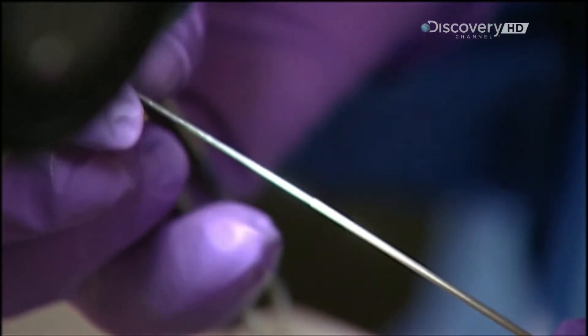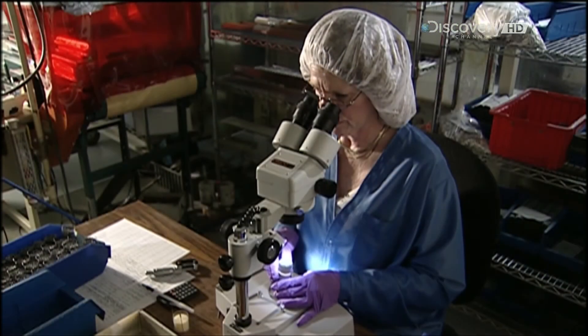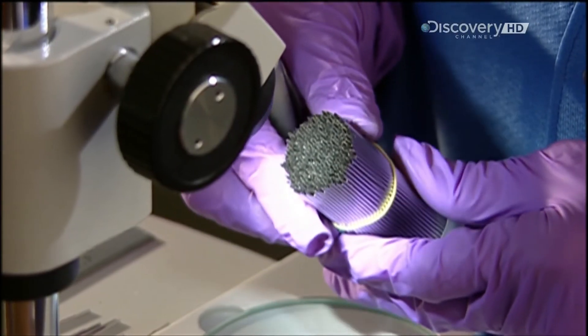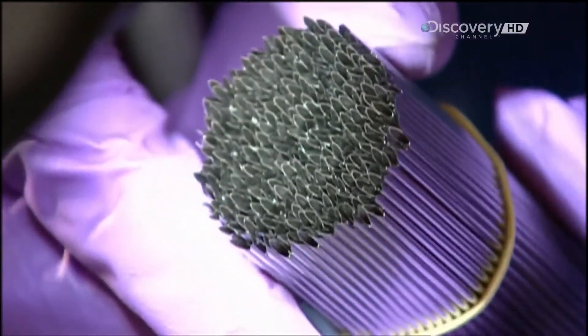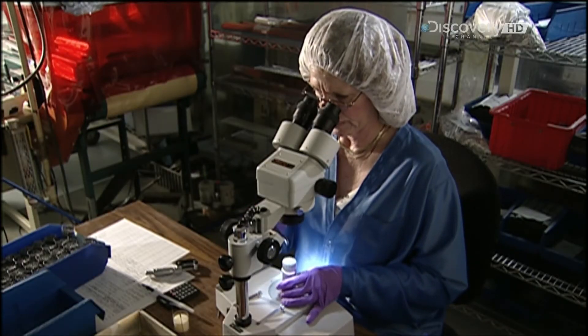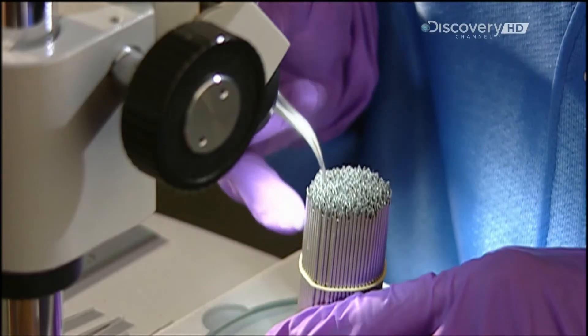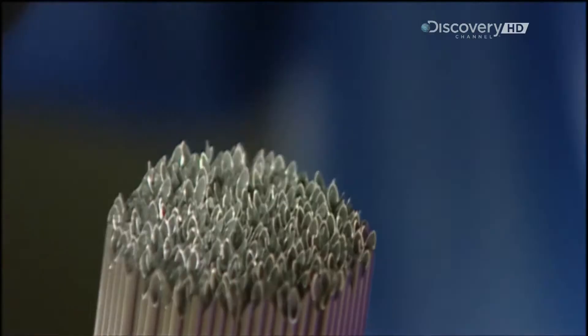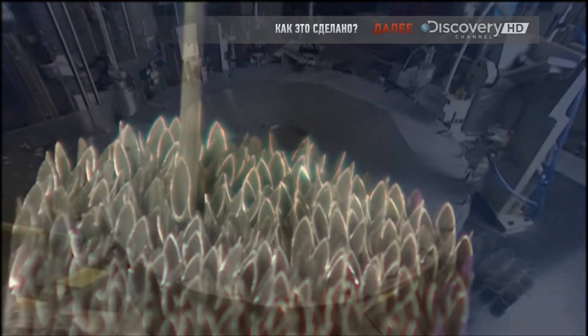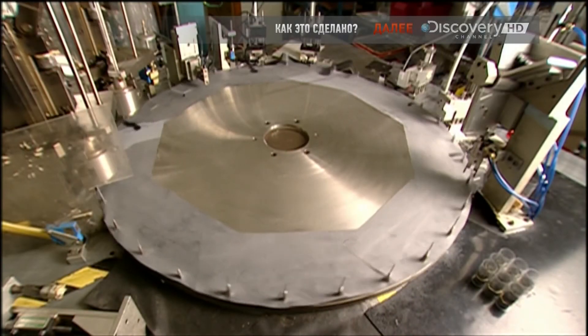Then, the inside diameter is checked, by inserting a plug gauge into the tube. Now, a bundle is inspected for irregularities or burs. Using tweezers, one is removed for a close-up look under the microscope. Once they pass inspection, it's onto the automated assembly machine.